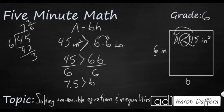If we want to look at it the right way, let's flip that: the base B is going to have to be less than 7.5. So we switched sides and flipped the inequality sign. That is how you can use the division property of equality to find a missing side for an inequality regarding the area of a rectangle.